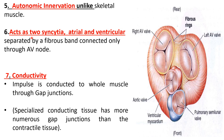Property number six: the muscle fibers act as two syncytia — the atrial and the ventricular. They are separated by a fibrous band connected only through the AV node. This fibrous band contains the atrioventricular valves and the semilunar valves of the aorta and pulmonary artery. There is only one point — the AV node — at which these two syncytia are connected.